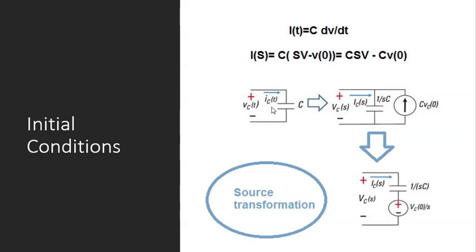So for this capacitor in the S domain, the current equals Cs·V minus C·V₀⁻. So if this capacitor has no energy stored inside — meaning if it has no initial condition — then this part will be zero. So I will simply be Cs·V, which makes our lives much easier.